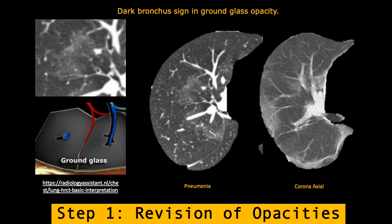If you have a look here, this is a typical revision of the opacities. On the left you have pneumonia, which is a typical ground glass opacity. Whereas if you look at the lung to the right, you can tell that it is actually completely filled and it starts peripherally.